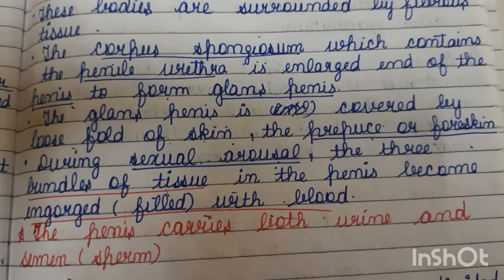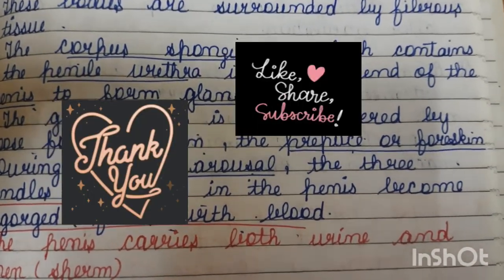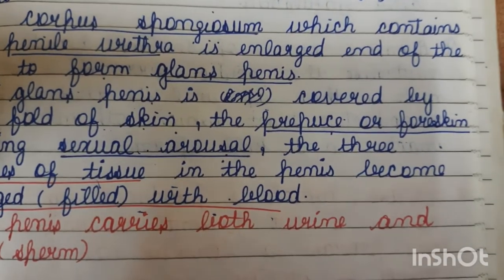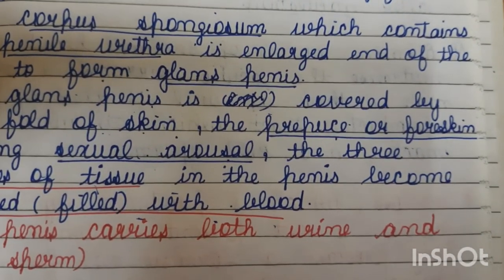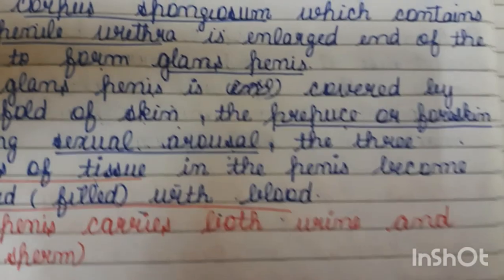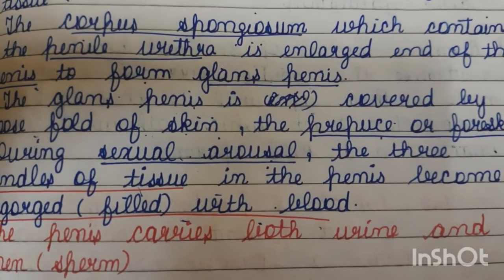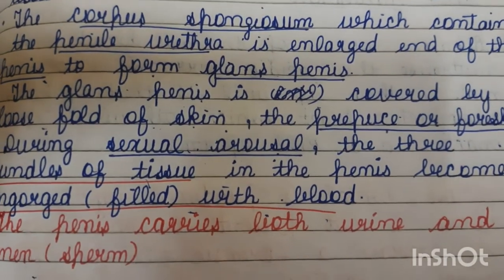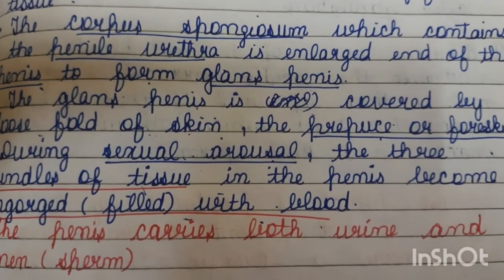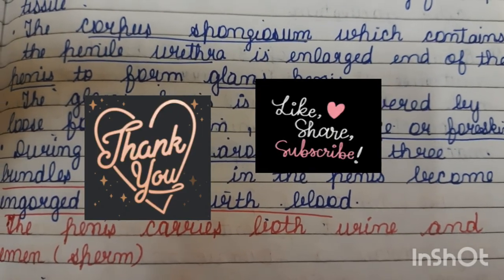In the next video, we will discuss the male accessory glands, consisting of three parts: seminal vesicle, bulbourethral gland, and prostate gland. Till then, stay tuned to my channel. I hope you liked this video — if you did, please don't forget to subscribe, like, share, and comment. Thank you.